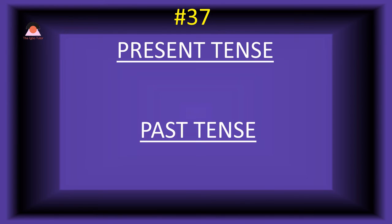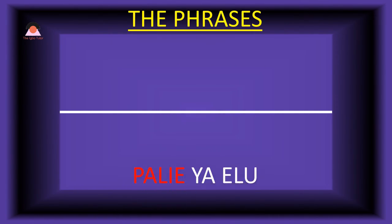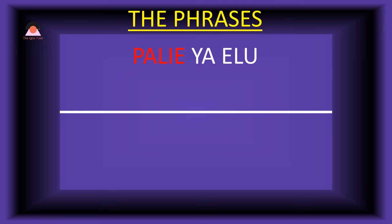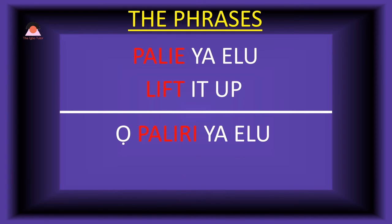Word number thirty-seven: 'palye,' meaning 'lift.' The past tense of palye is 'paliri,' meaning 'lifted.' Present tense phrase: 'palye ya elu' — lift it up. Past tense: 'o-paliri ya elu' — he lifted it up.